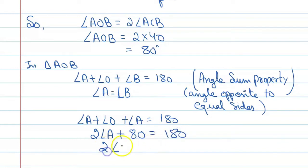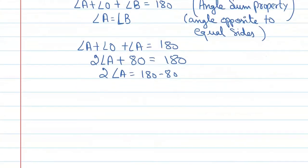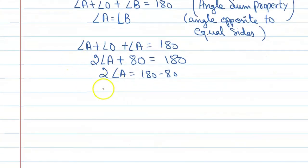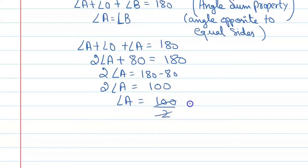So, double of angle A is equal to 180 minus 80. As we find this value, we get: double of angle A equals 100, and angle A is equal to 100 upon 2, that is 50.